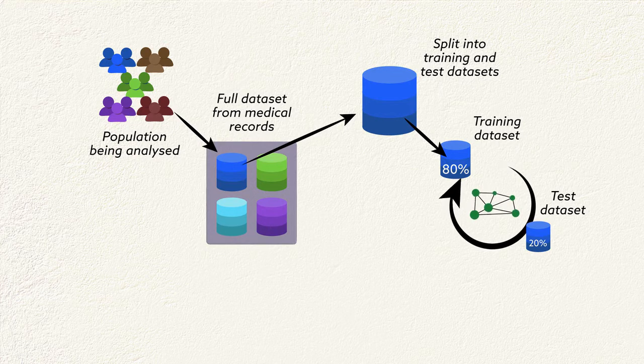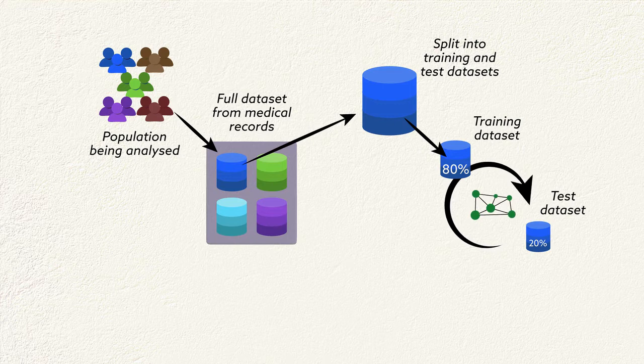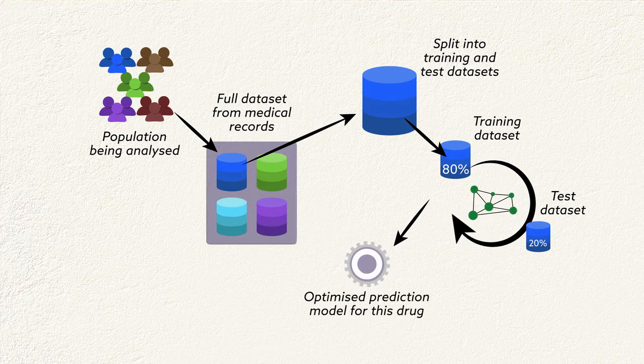Changes are made to the model to improve prediction accuracy before the model is applied to the test dataset again, then changed again, then tested again, and so on, until prediction is optimized.